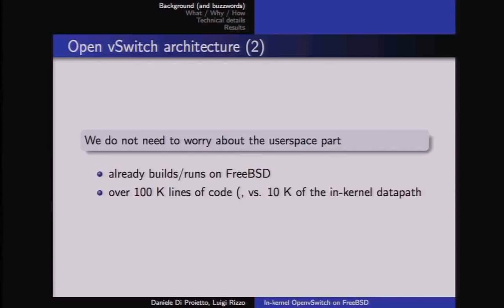In terms of code size, the upper part is about 100,000 lines and fortunately already builds and runs on FreeBSD — so we don't have to worry about porting that part. The internal data path part is about 10,000 lines of code, which is manageable in practice.